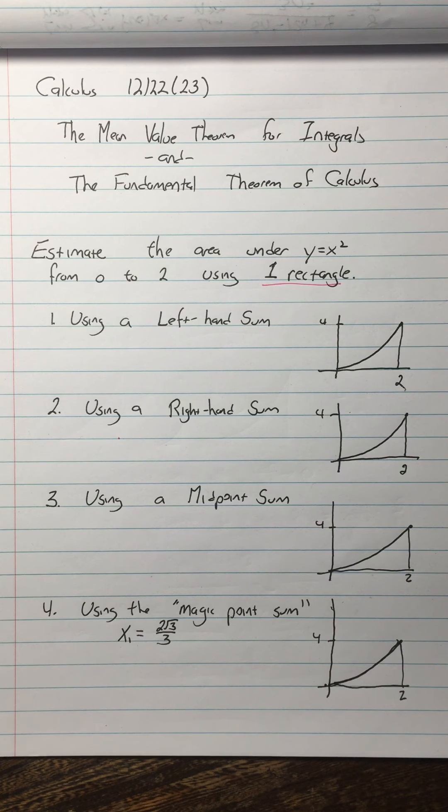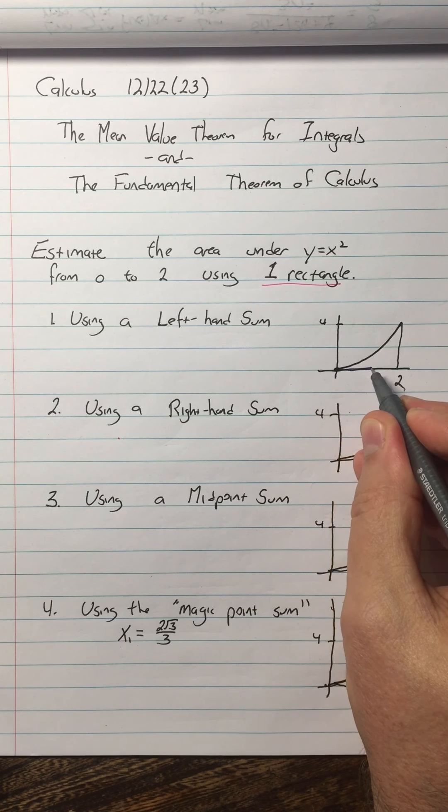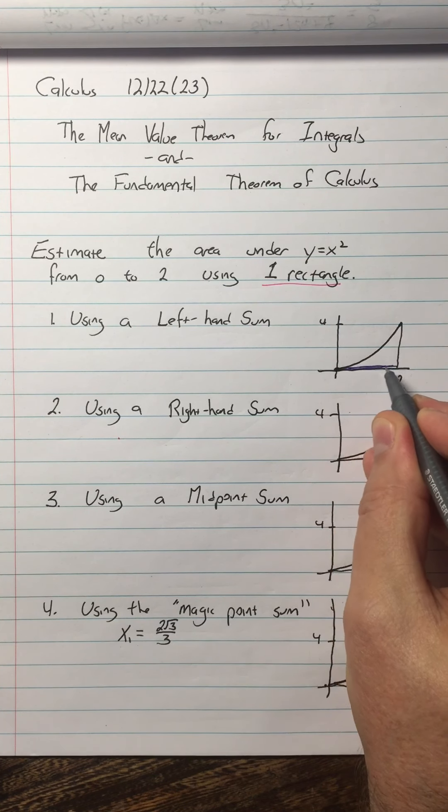Okay, you're back now. When we do the left-hand sum, that means we're just going to have a rectangle that touches on the left, and it's just going to be zero.